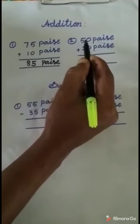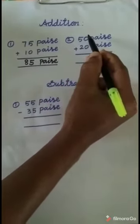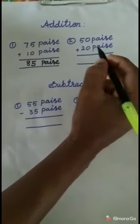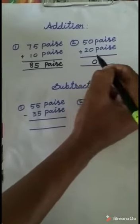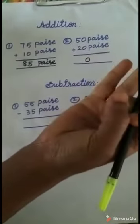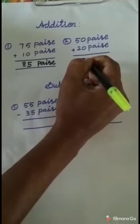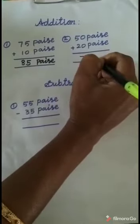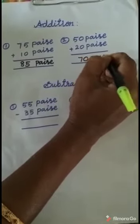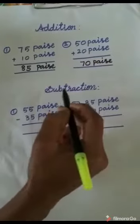See the next example: 50 paisa plus 20 paisa. First we add the one's place, 0 plus 0 equals 0. In the tens place, 5 plus 2. Leave two fingers, 5 after 6, 7. Here write 7. P-A-I-S-E, paisa. 70 paisa.